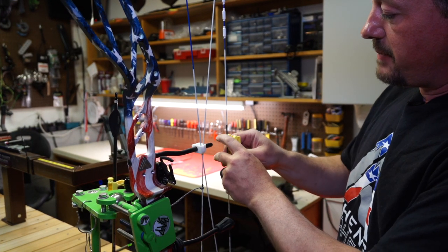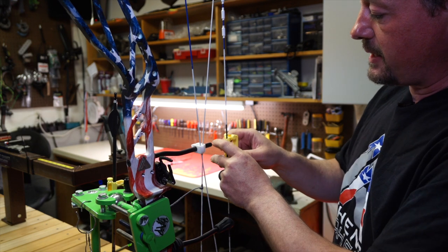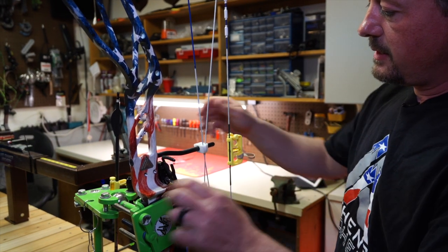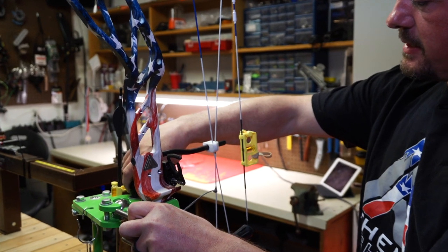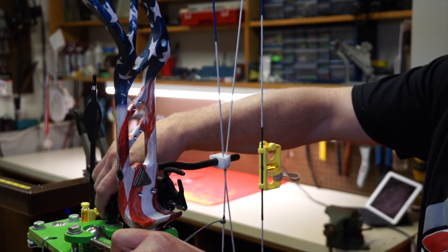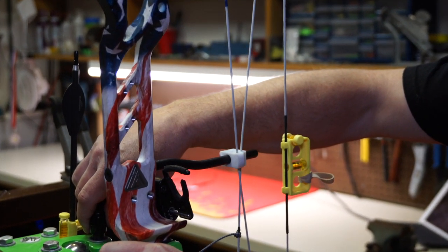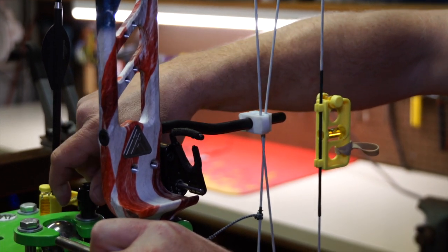I take my bubble level and snap it onto my serving, and then I adjust my vise until both bubbles are level. I lock it down.